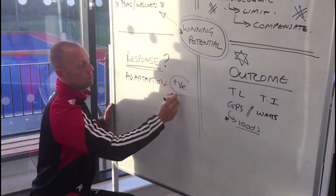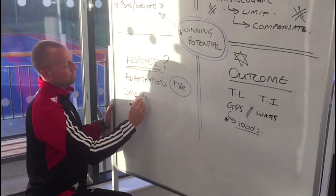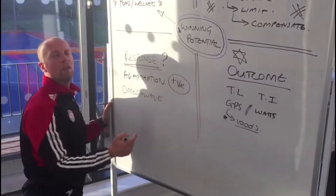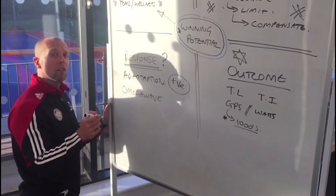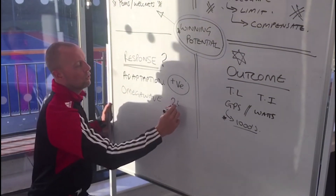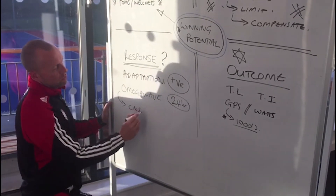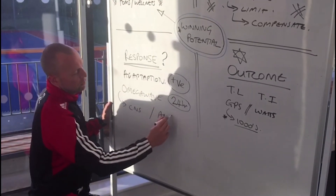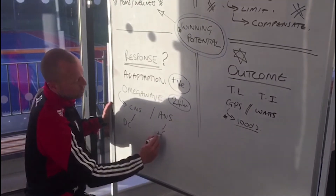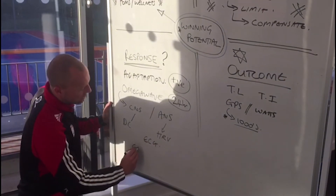That's ultimately where I'm going to get more margin in winning potential. I understand their perception, I understand how they're achieving what they're achieving, I can quantify that against my pre-planned, and it leads us to the 'response' column — what is the adaptation we have created? Is it positive adaptation? That's ultimately what we're looking for. We use a technology here called Omega Wave, which looks at the regulatory response of the body from all of this input plus all additional life stress, because adaptation is to their full 24 hours, not just the training program. Omega Wave gives us information from the central nervous system and autonomic nervous system — things like direct current (DC), HRV, ECG, and an energy index.